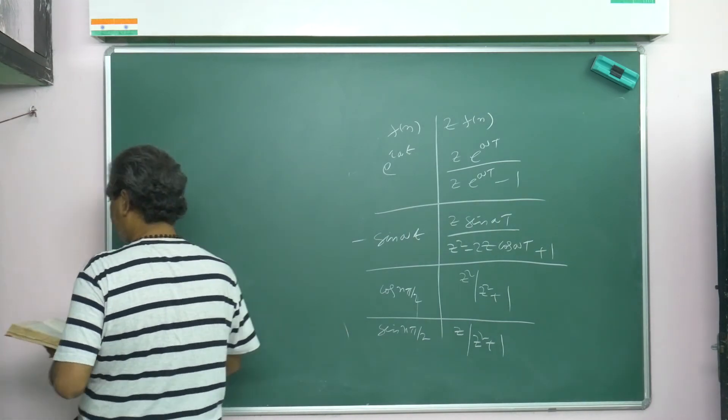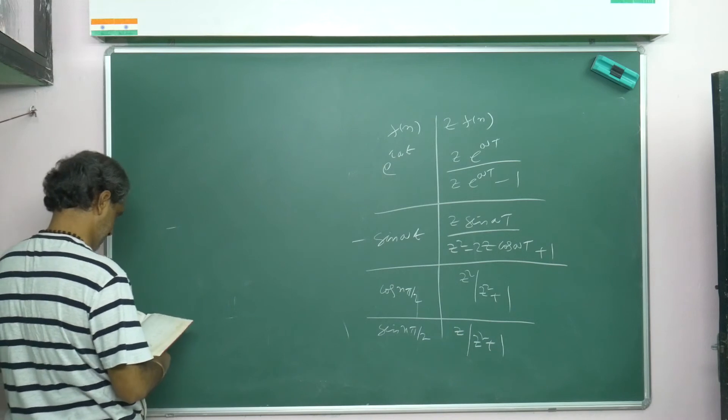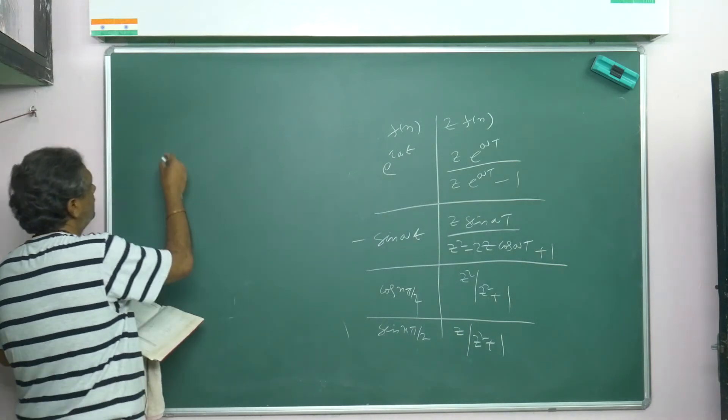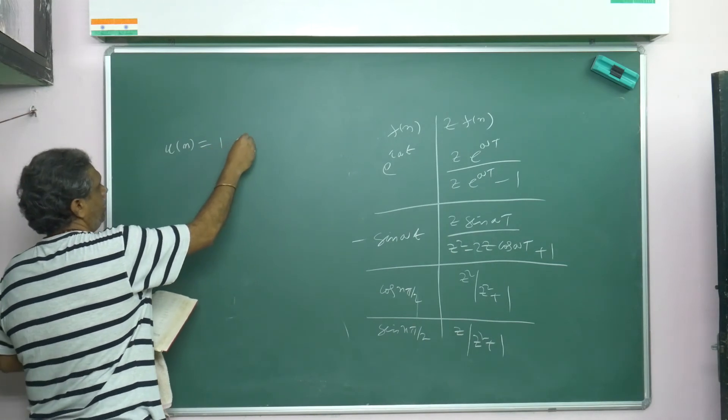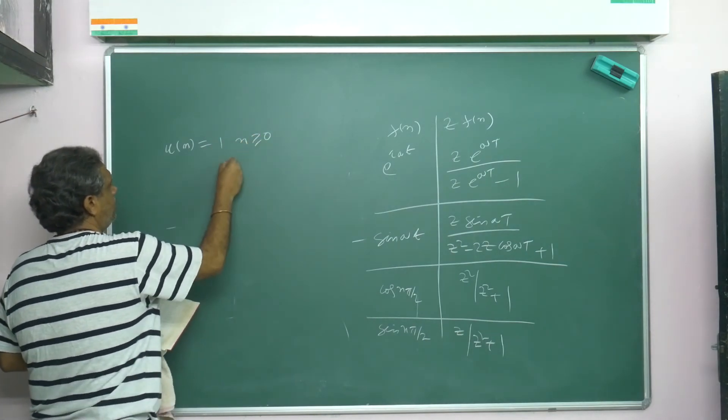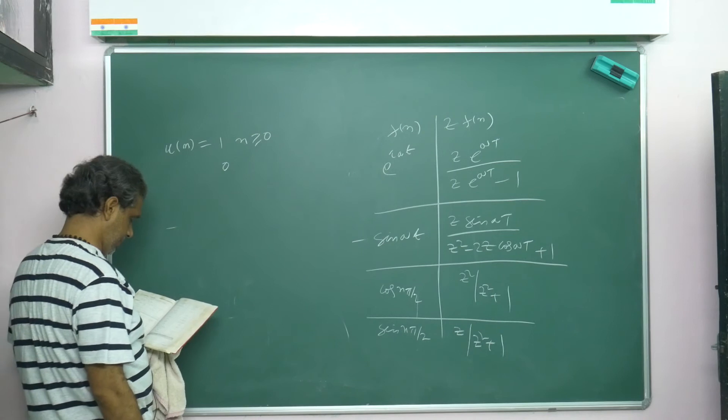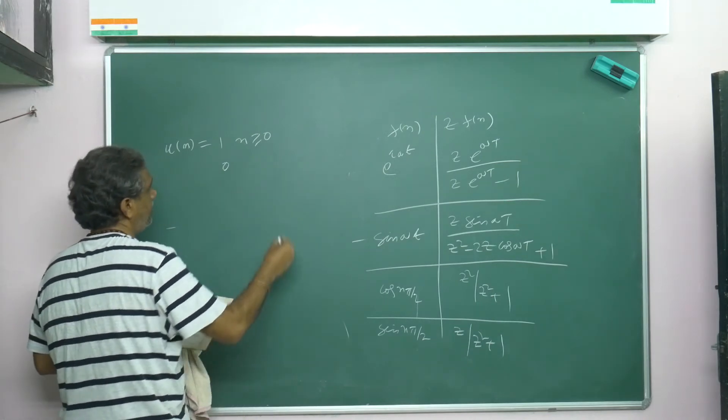Then some functions: the step function or unity function they may define. Just you can write u(n) = 1 for n ≥ 0, otherwise 0. For this, the Z-transform is z/(z-1).